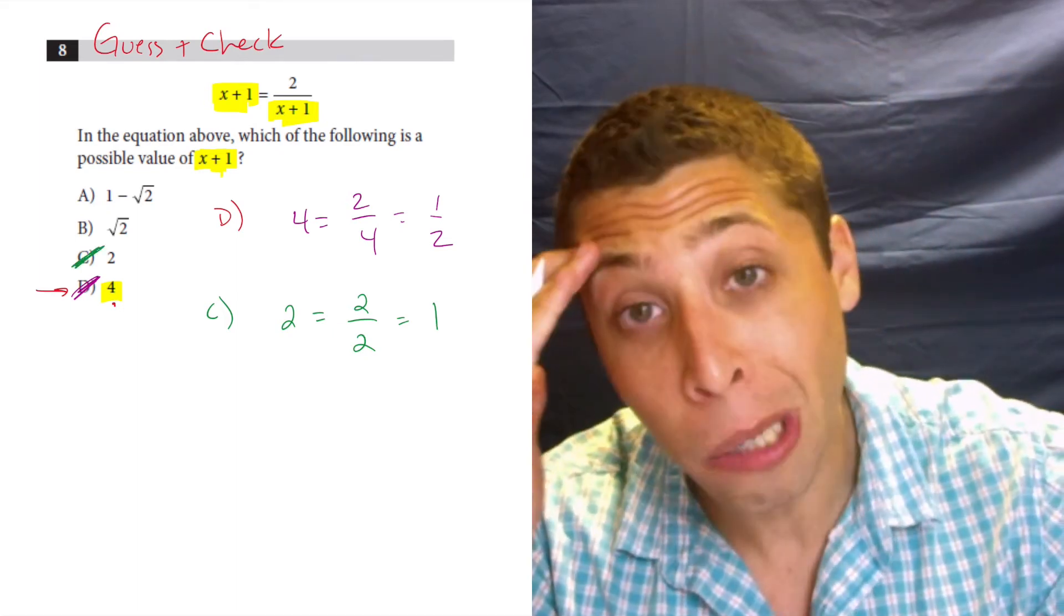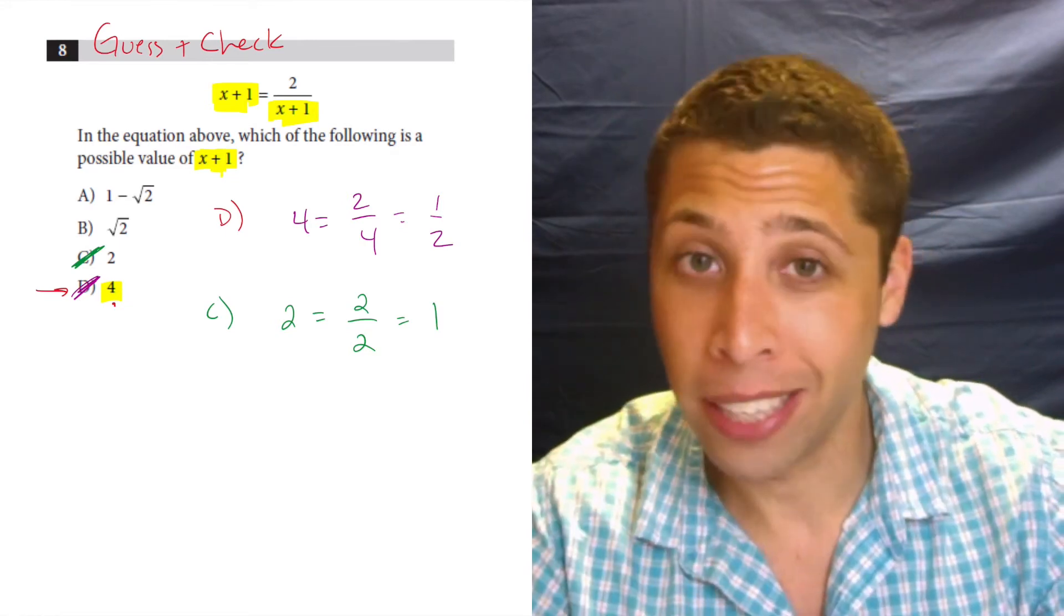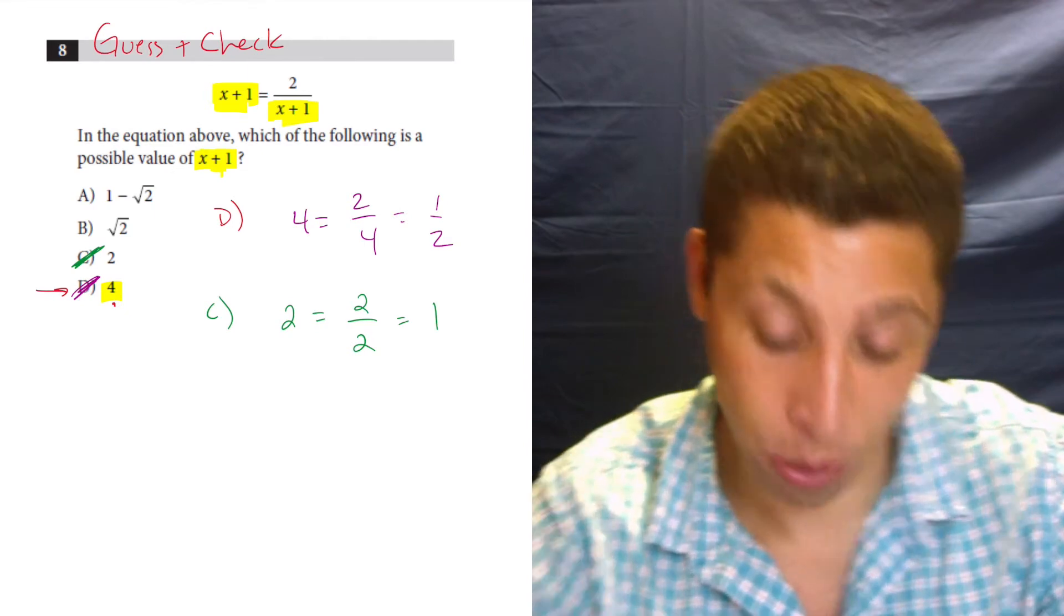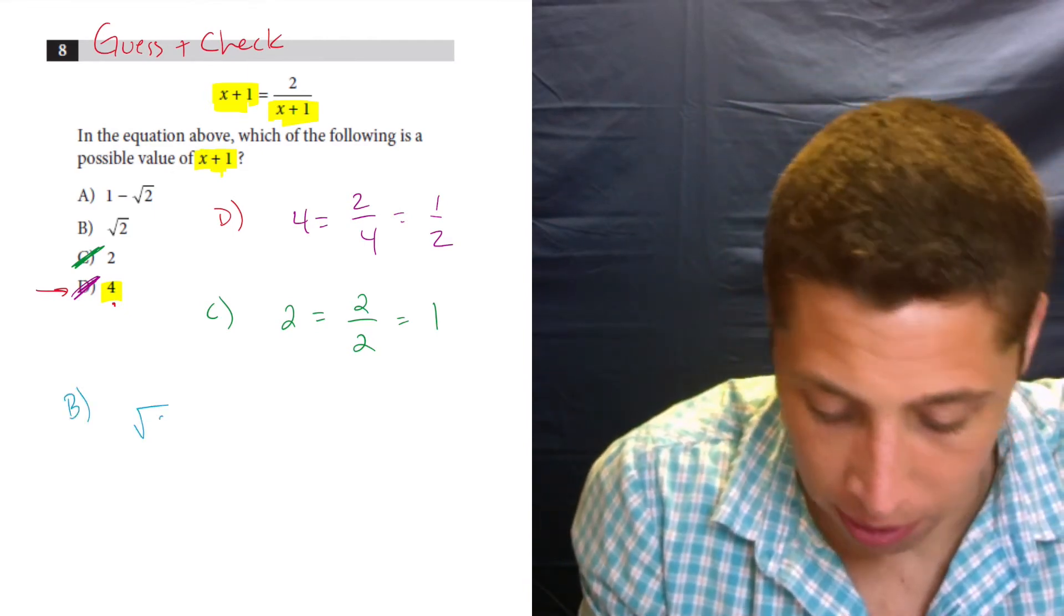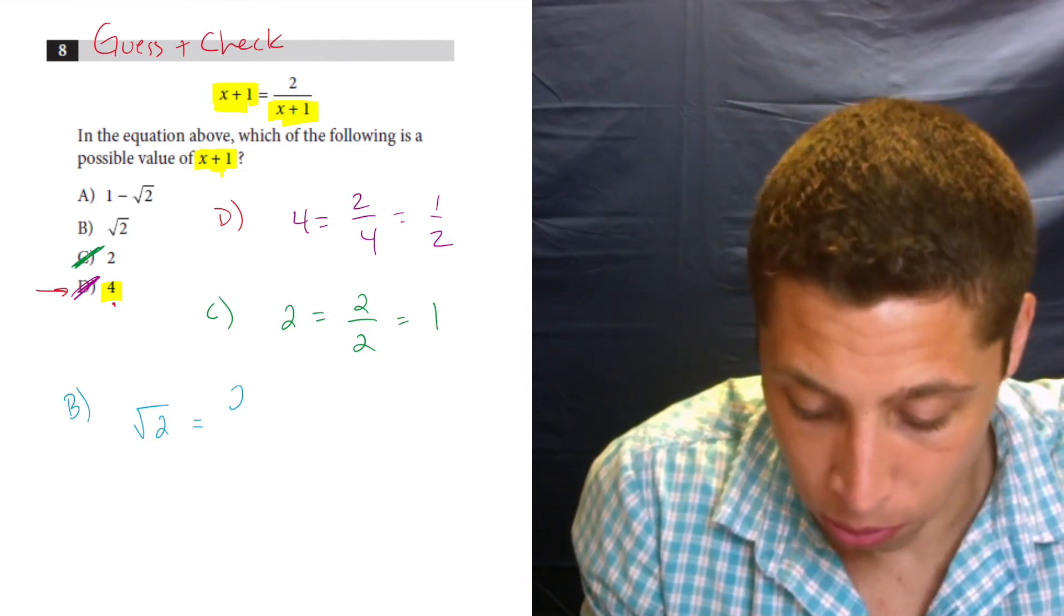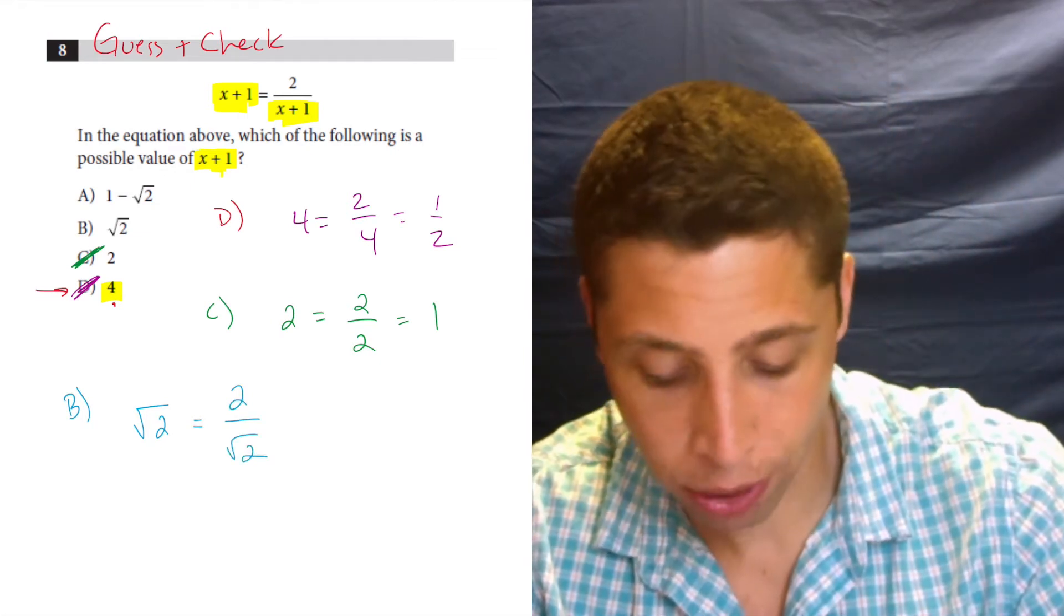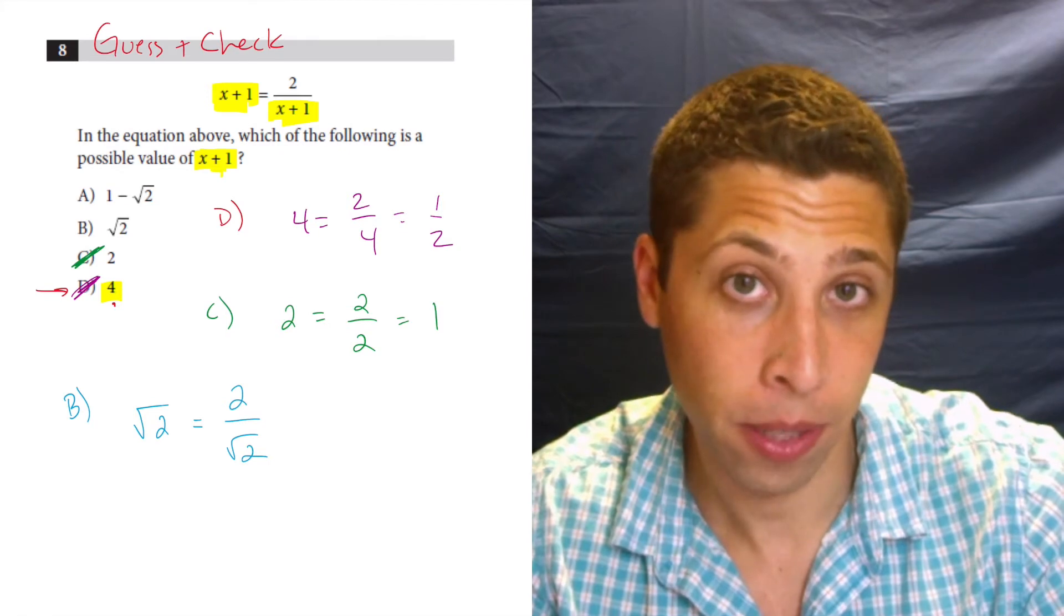Now you're like, oh no, I'm going to have to do this weird thing. Well, again, be lazy. What's the easier of the two here that you can do? Well, I can do B first because radical two is a little bit easier of a number. Radical two equals two over radical two.